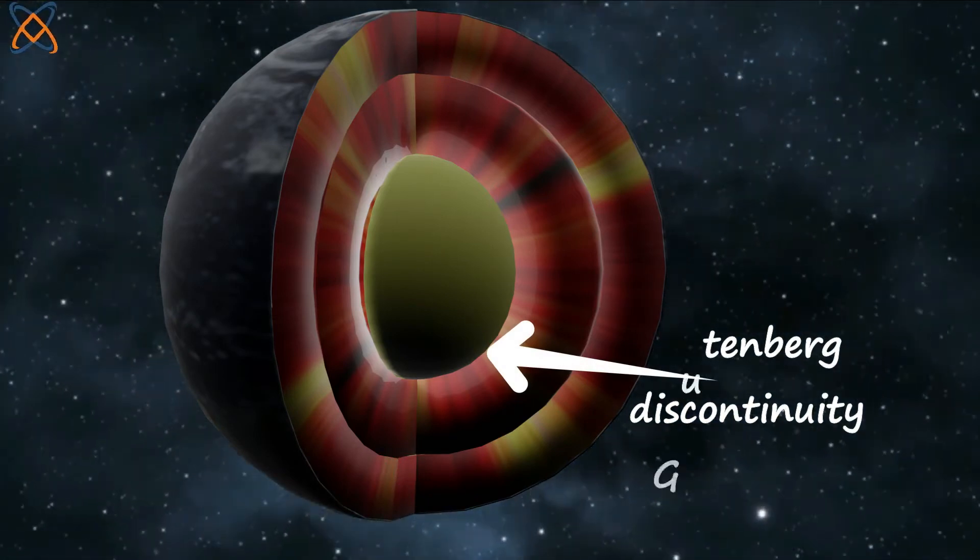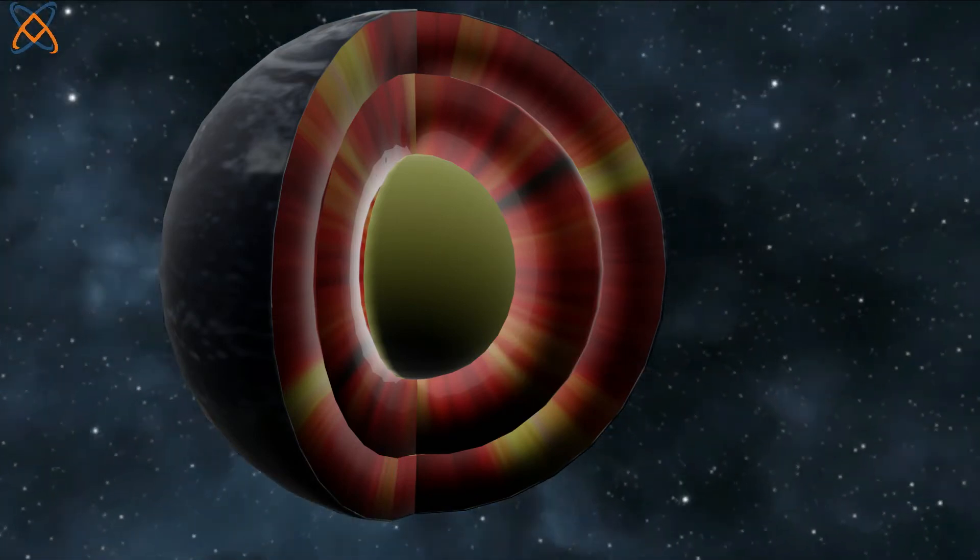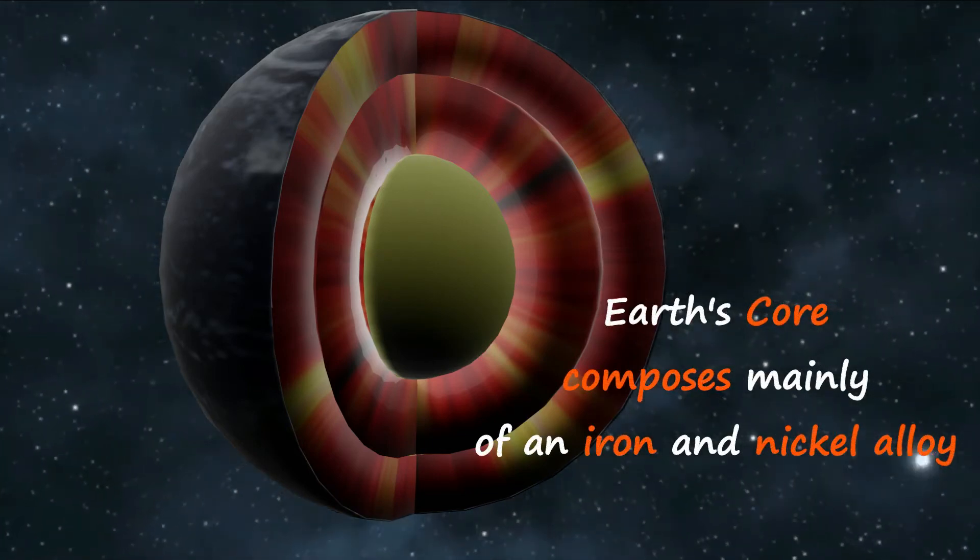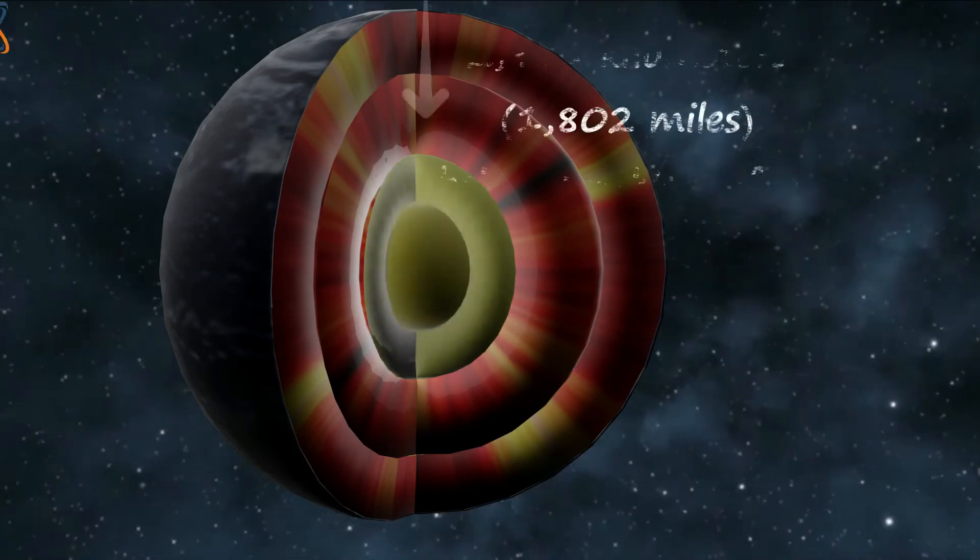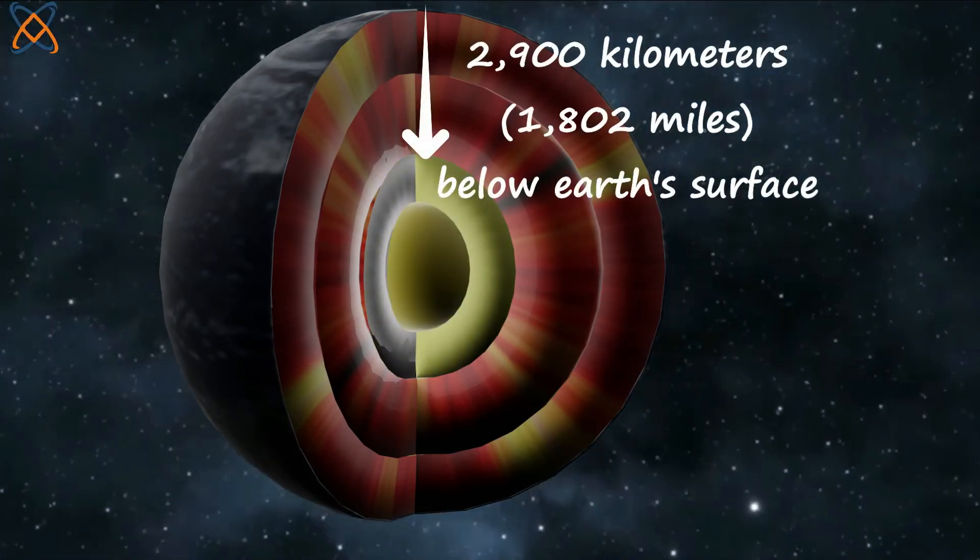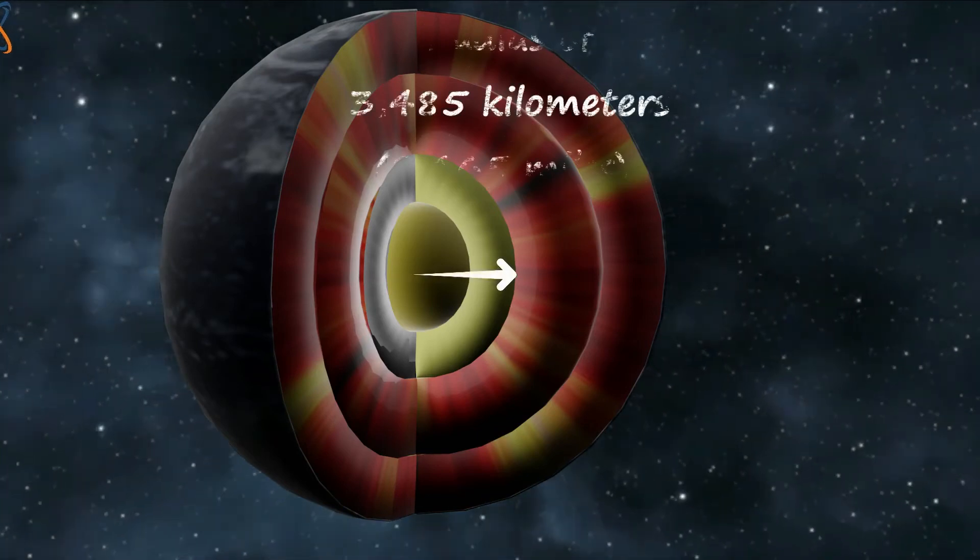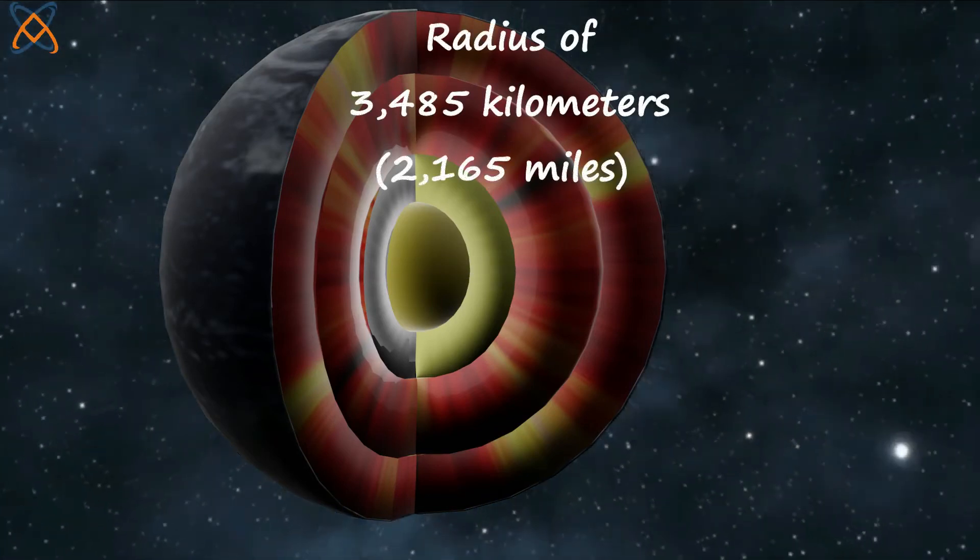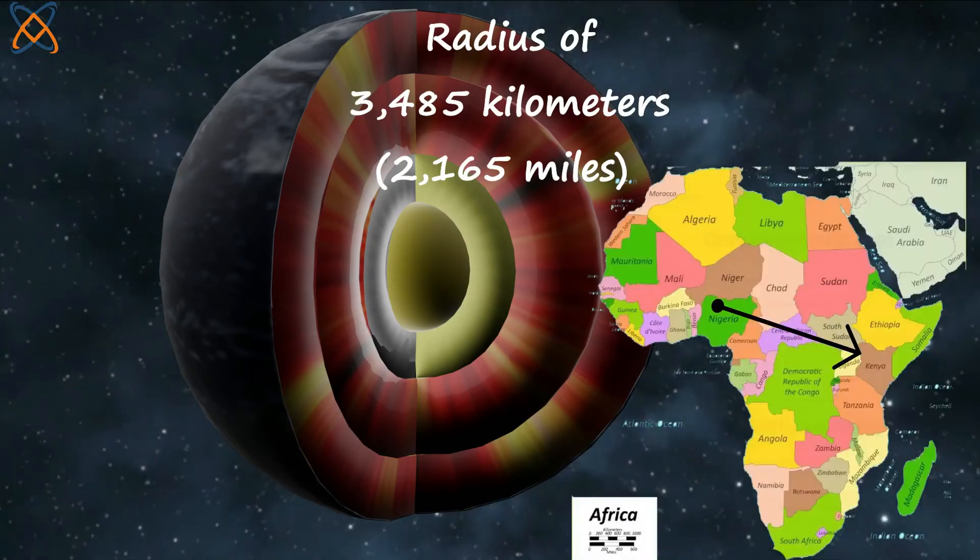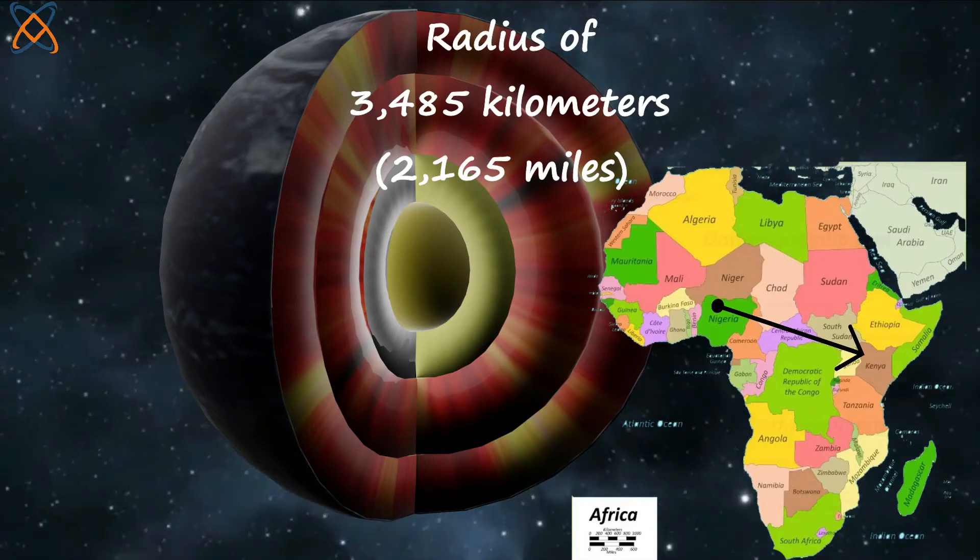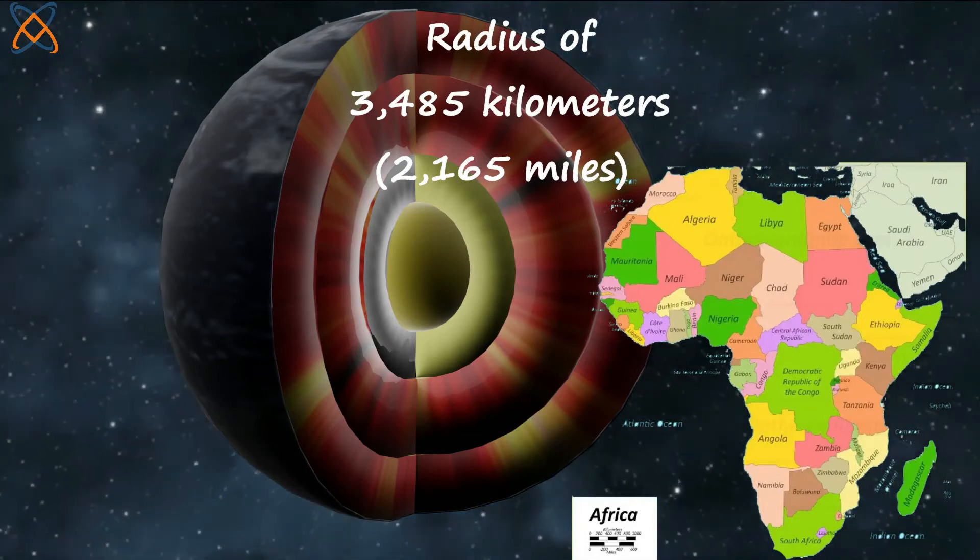Earth's core, based on some calculations and observations, is said to be composed mainly of iron and nickel alloy. It is about 2900 kilometers below the Earth's surface and has a radius of about 3,485 kilometers. That's almost the same distance between Nigeria and Kenya in the easternmost parts of Africa.